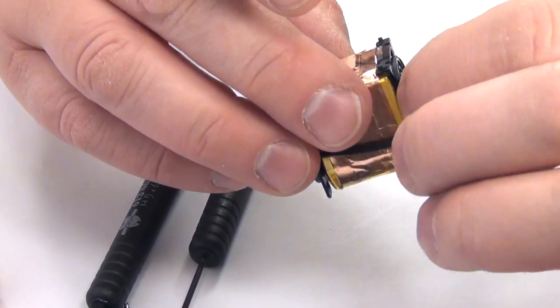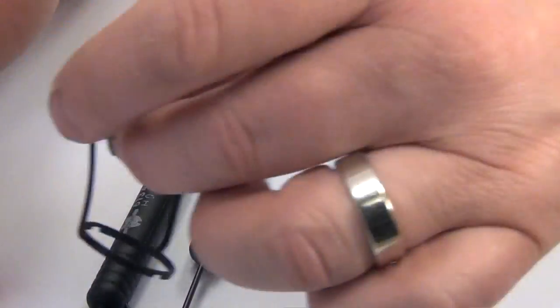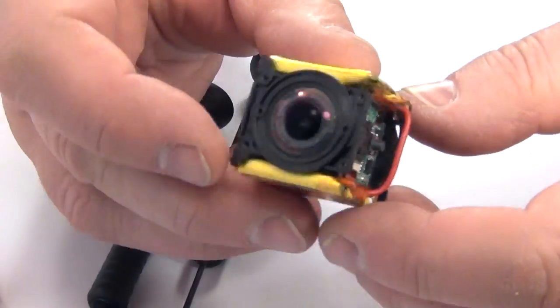Now we can take the rubber seal off. There it goes. And there we have the camera.